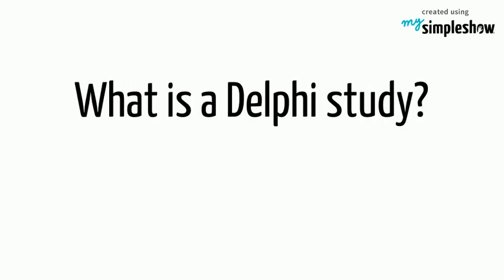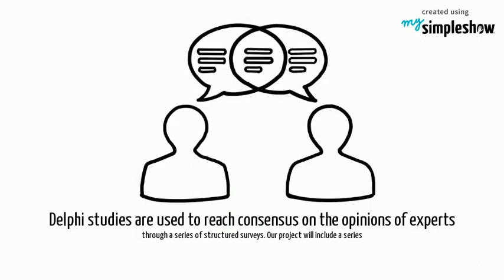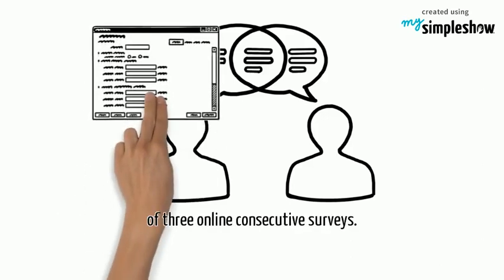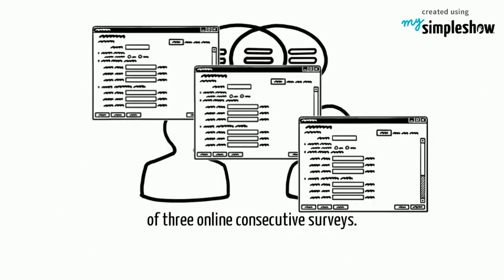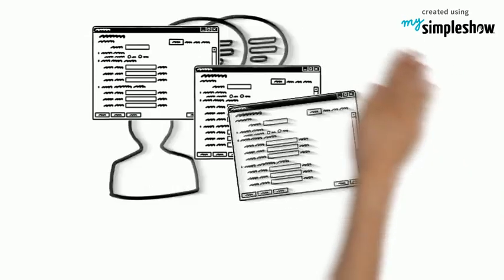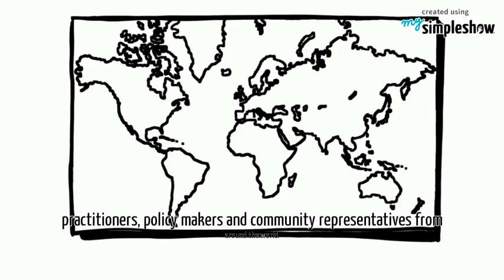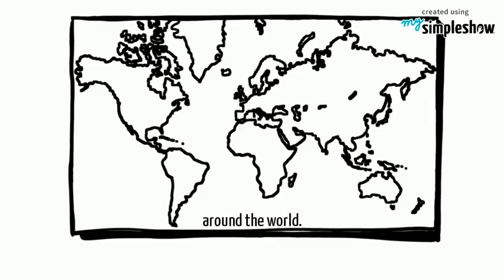What is a Delphi study? Delphi studies are used to reach consensus on the opinions of experts through a series of structured surveys. Our project will include a series of three online consecutive surveys. We have identified a list of social legacy experts — 100 academics, practitioners, policy makers and community representatives from around the world.